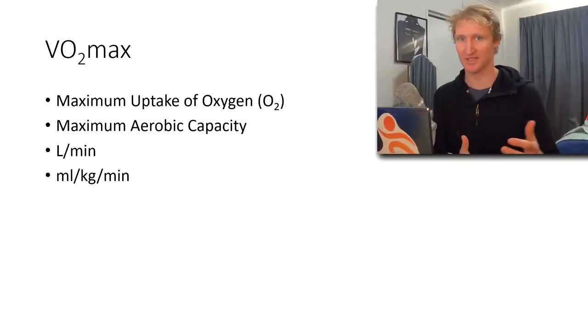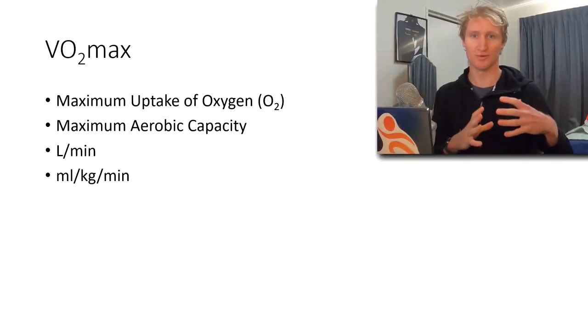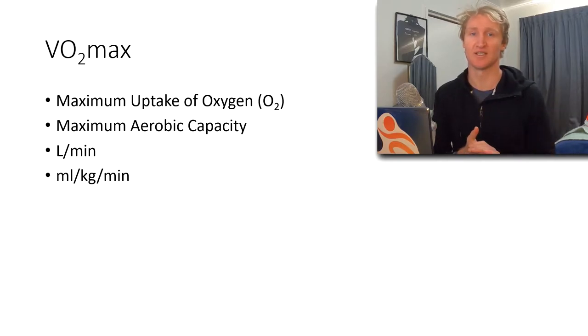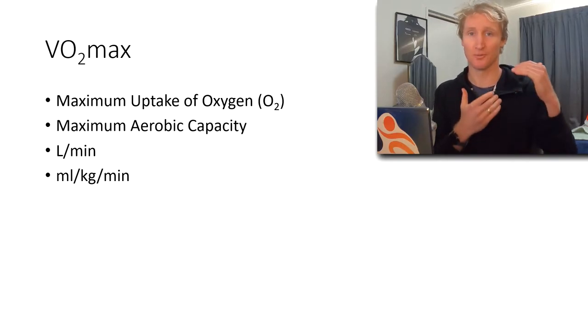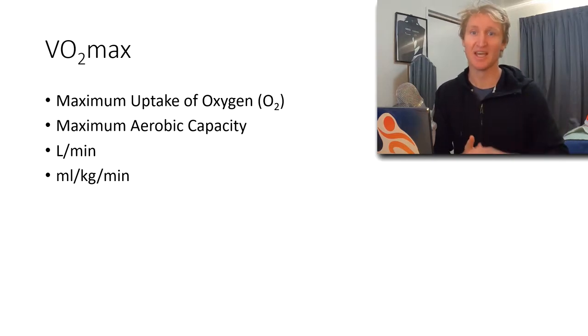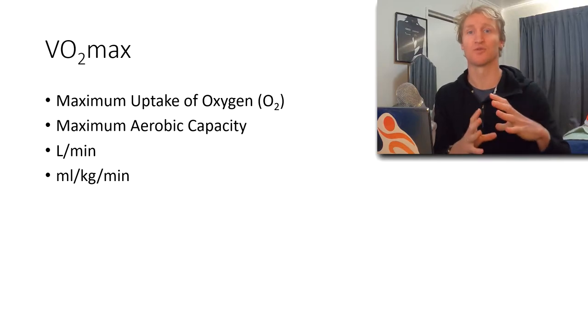Then you have VO2, which is the measure of oxygen required to undertake a particular task. So if you're able to run a 40-minute 10 kilometer, you're not doing that at your peak maximal aerobic capacity. You're doing it slightly below that, so you'll have a VO2, an oxygen requirement to run those four-minute K's.